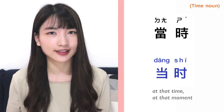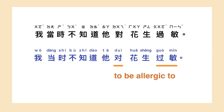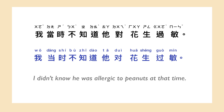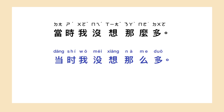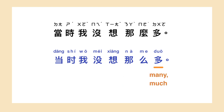Next, if you want to express 'at the time' or 'at the moment', you can say 当时. Like 我当时不知道它对花生过敏 — I didn't know he was allergic to peanuts at that time. 当时我没想那么多 — I didn't think that much at that moment.